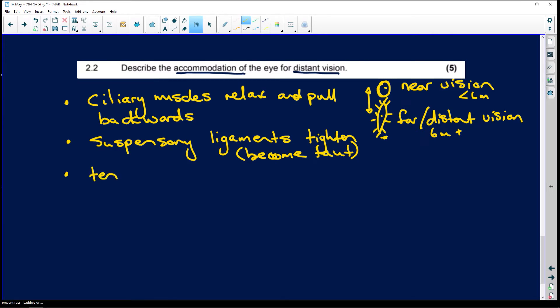Tension on the lens increases because remember these ligaments now start to pull the lens. So tension on the lens increases and the lens becomes less convex and flatter.